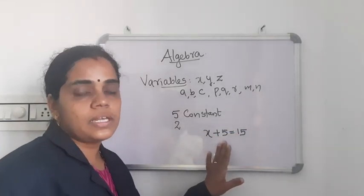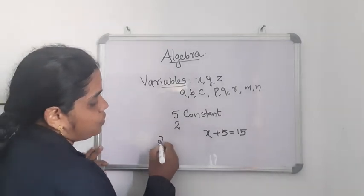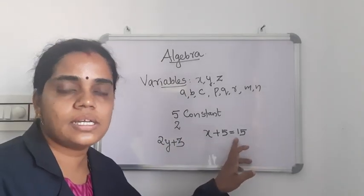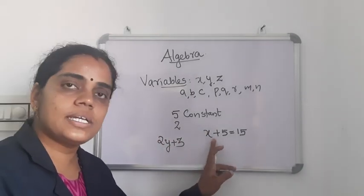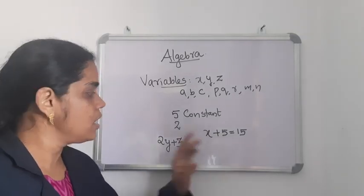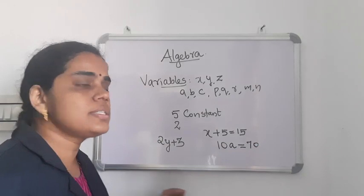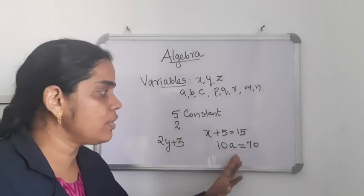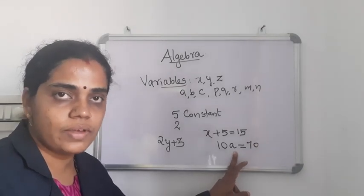This is an algebraic equation. If there is an equal to sign, we can say that it is an equation. Here X is a variable, 5 and 15 are constants, and the operation used is addition. Another example is 10A equal to 70 — this is also an equation. Here the variable is A. The value of an equation means the left hand side and right hand side must be equal. That number is the value of the variable.